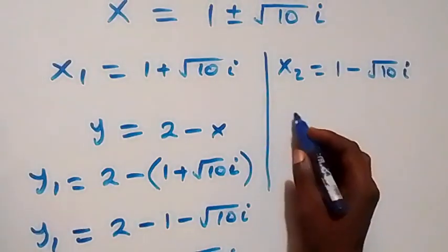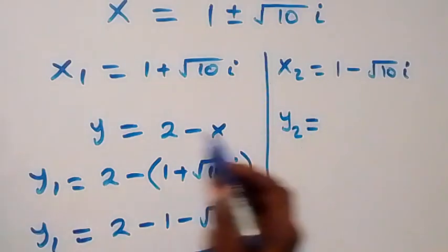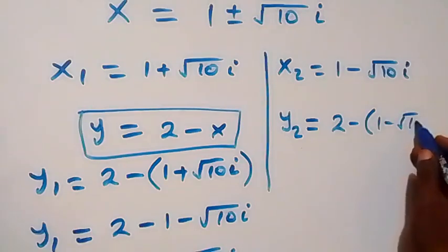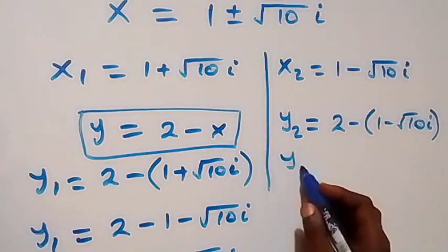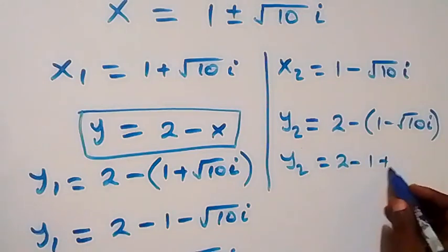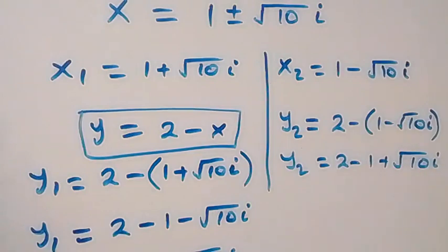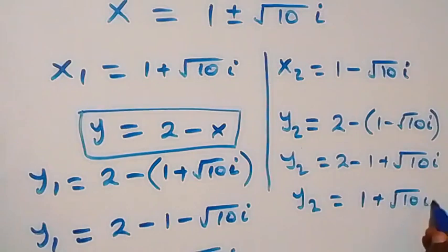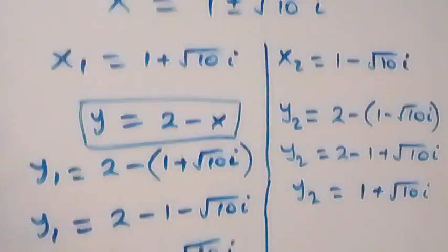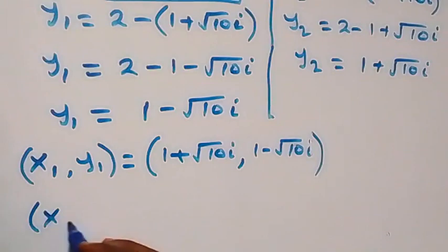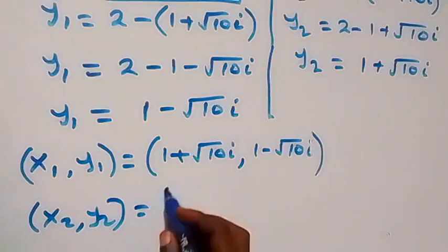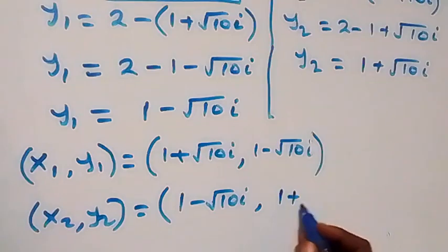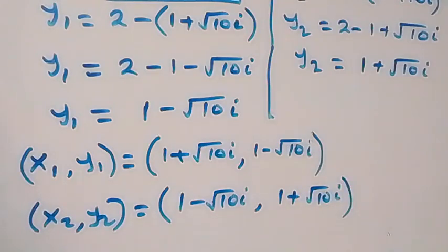We also find y2 using the same relation: y2 equals 2 minus x2, that is 2 minus 1 minus root 10 i. Opening the bracket, y2 equals 2 minus 1 plus root 10 i, so y2 equals 1 plus root 10 i. The second set of solutions, x2 comma y2, is 1 minus root 10 i comma 1 plus root 10 i.